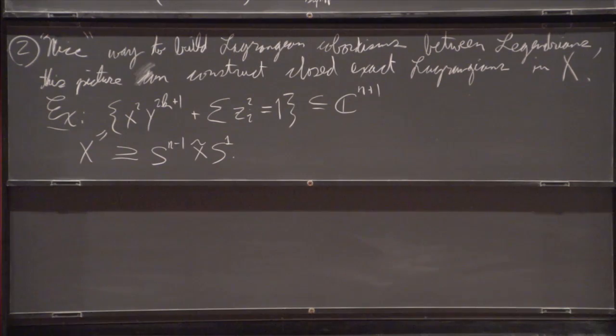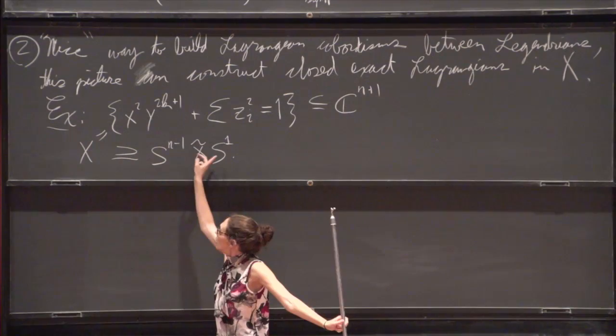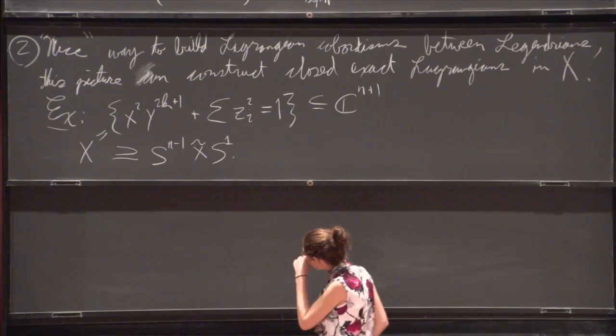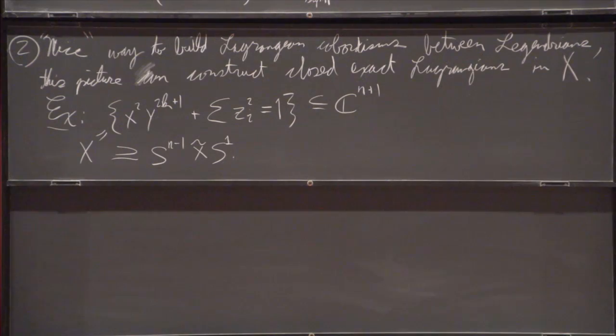Did you say it was a non-manifold? Yeah. You could call this the mapping torus of the orientation reversing diffeomorphism of the sphere. In particular, if N is 2, it's a Klein bottle.